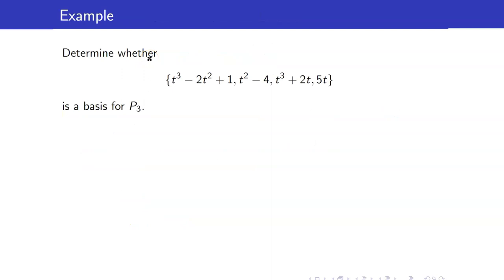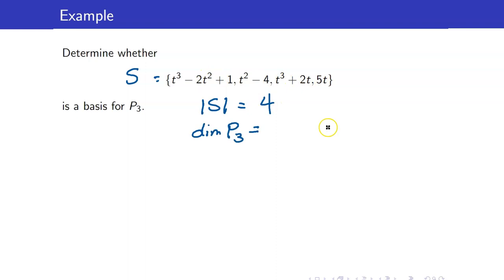So for example, let us determine whether this set is a basis for P₃. Always check the cardinality first. The cardinality of S here is equal to 4. The dimension of P₃ is equal to 3 plus 1, which equals 4. We can now use the previous theorem.